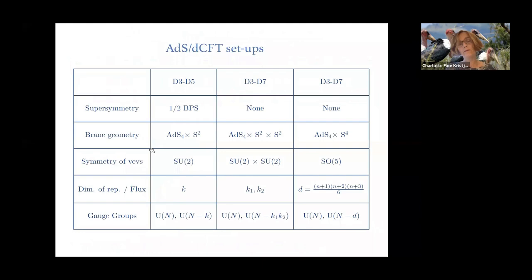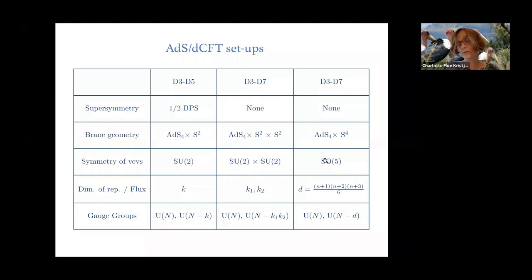There are a number of different setups of this type, listed in a table. The one described is a half-BPS setup involving a single D5-brane. There are also setups involving D7-branes that are completely non-supersymmetric. In one case, the classical fields split into two groups each carrying a representation of SU(2); in the other, the classical fields are matrices whose commutators constitute representations of SU(5). Both have a co-dimension 1 defect separating regions with different gauge group ranks.